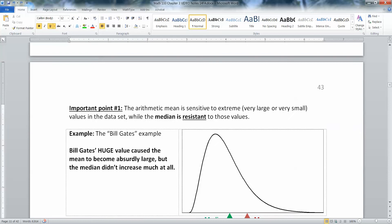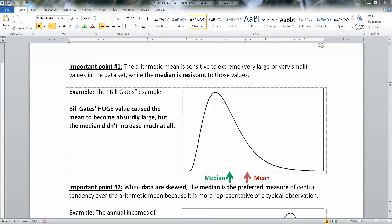So that leads us to important points to notice about the median. Number one, the arithmetic mean is very sensitive to extreme, very small or very large data values. So the median is resistant to those values. Example would be Bill Gates. He caused a huge increase in the mean that was absurd, but the median didn't increase much at all.